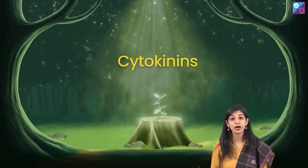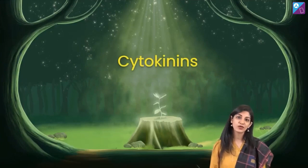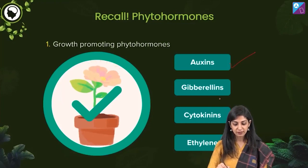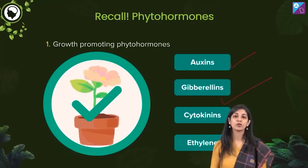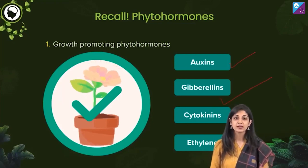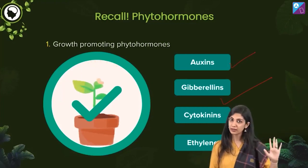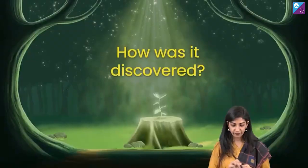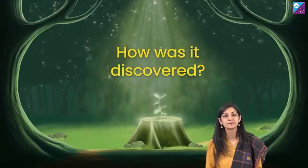So we will now talk about cytokinins. Till now we have studied auxins and gibberellins, and the third growth promoter we are going to study is cytokinin. Let's do it — how was it discovered?